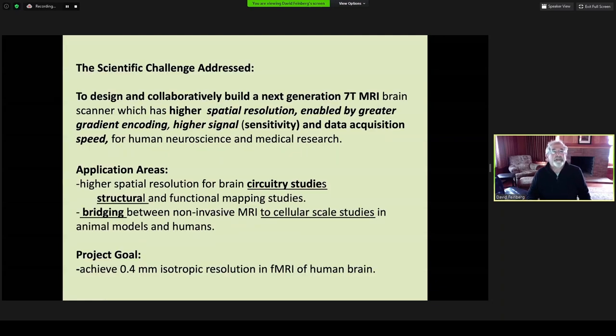The scientific challenges we are addressing to design and collaboratively build a next-generation 7T scanner is to increase the spatial resolution considerably. This is enabled by greater gradient encoding capabilities, higher signal sensitivity, and increased data acquisition speeds for human neuroscience and eventually medical applications.